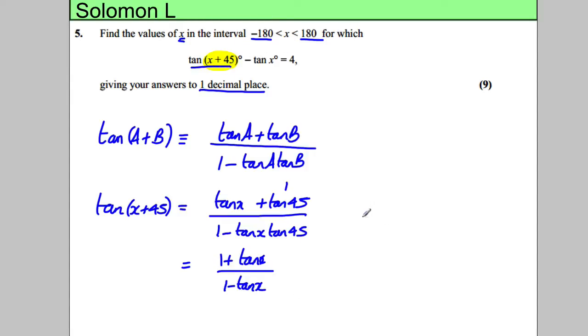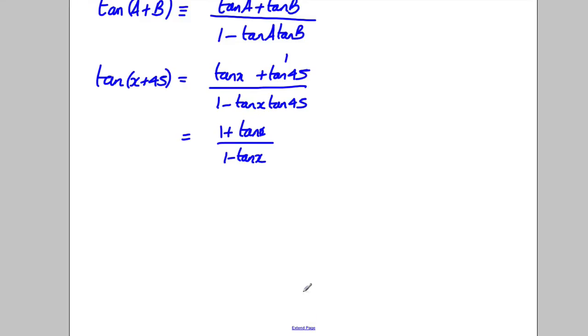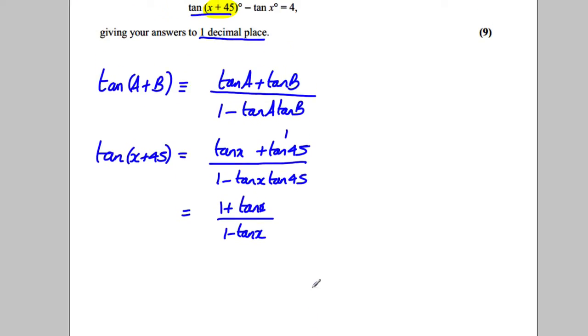Let's replace that by what we've got here and keep going with solving that equation. So instead of tan X plus 45, I'm going to write 1 plus tan X divided by 1 subtract tan X is equal to 4.